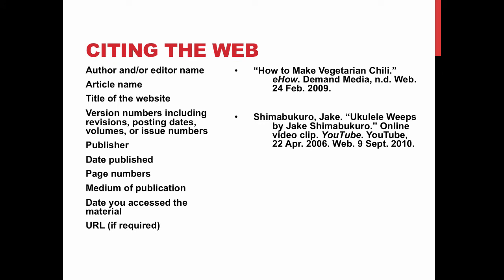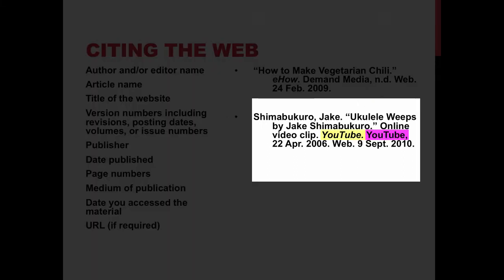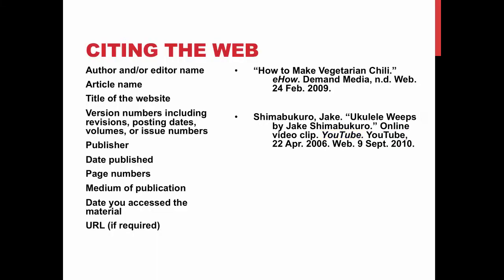Some instructors ask that you put the URL — it's not required in MLA format, but for your next annotated bibliography, I do want the URL listed at the end. In the second citation example, the title of the website and the publisher are the same — you need to put them both, making sure the title is italicized to distinguish the two. If there is no publisher, put N.P., same as N.D. for no date. Pay attention to date formatting: day first, then the month shortened, then the year.